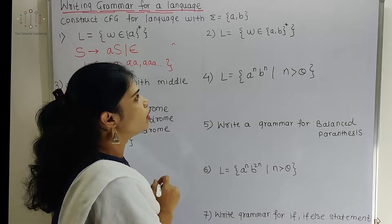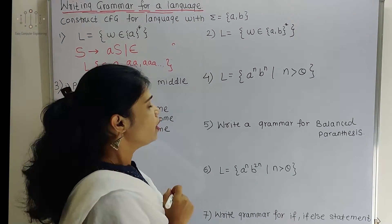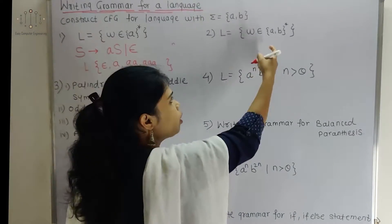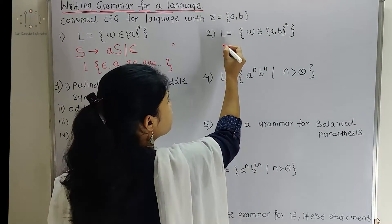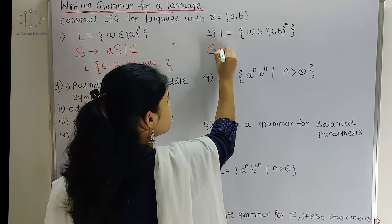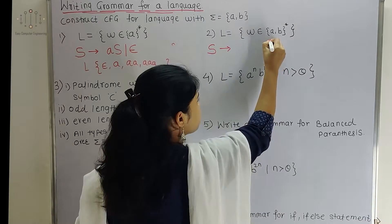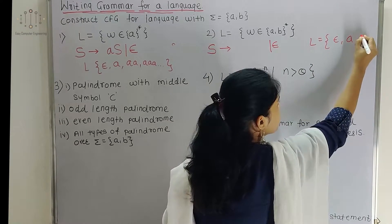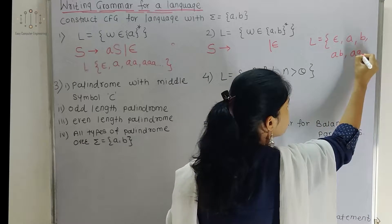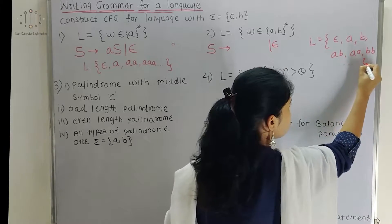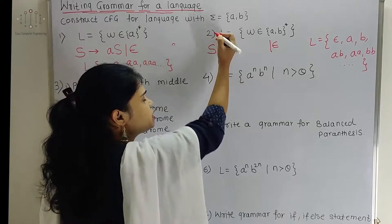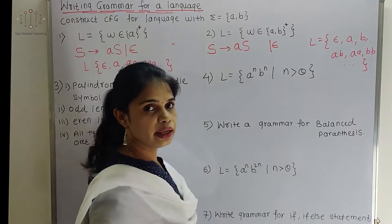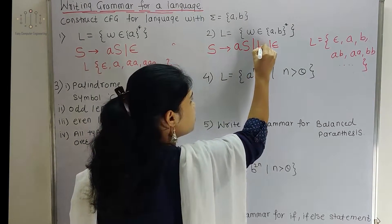Now the second example is L equal to omega belonging to {A, B} star, that means every string over sigma equal to {A, B}. So how can we write the grammar? A comma B star means epsilon is one production for our grammar. We will take S as the starting symbol. Epsilon will be my production. Then for strings, our language will have epsilon, single A, single B, A B, A A, B B, any combination over {A, B}.